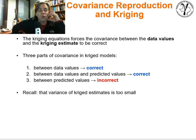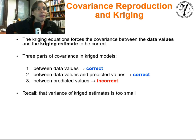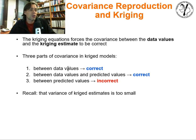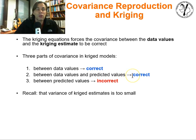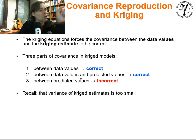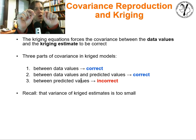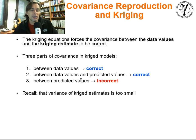The problem with covariance is interesting because we know we're okay between the data and the estimate location. Between the data values themselves — correct. The variogram is correct, everything is correct at the data locations. Between the data values and the predicted locations — correct, as we just showed. The problem comes between the predicted values, and we know that intuitively. If I make a kriging estimate at one location and another kriging estimate at another location, they're estimated independent of each other. There's no constraint to impose the right spatial continuity between the two. And the variance is still too small — we'll get that treated with the residual.